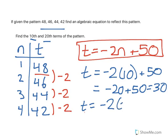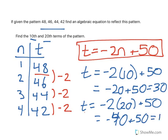And if I do the exact same thing for the twentieth term, I get negative 2 times 20 plus 50. So negative 40 plus 50 equals 10. So you can see the further down the pattern we go, the smaller the number of 10 and 30.